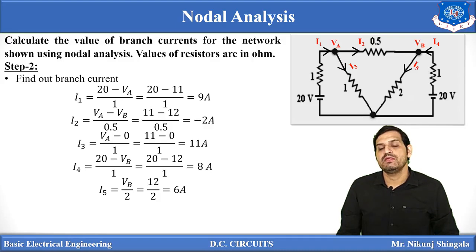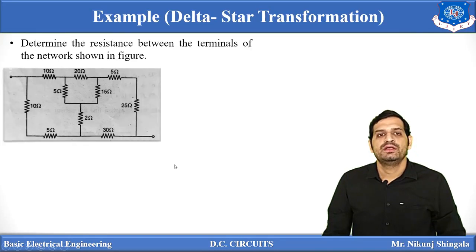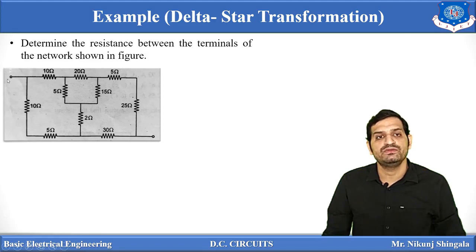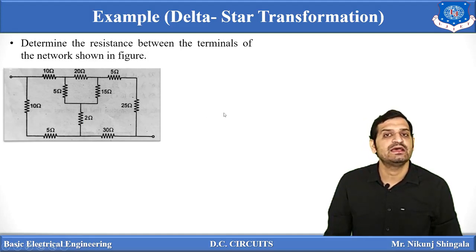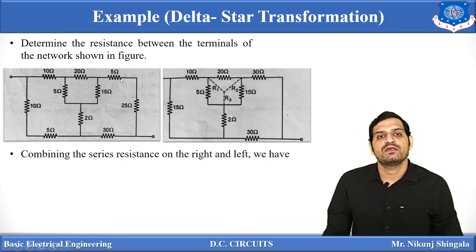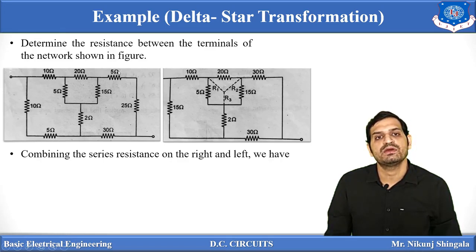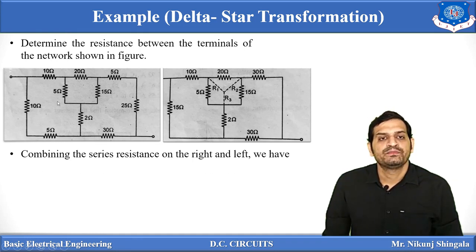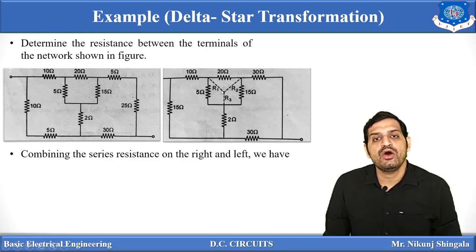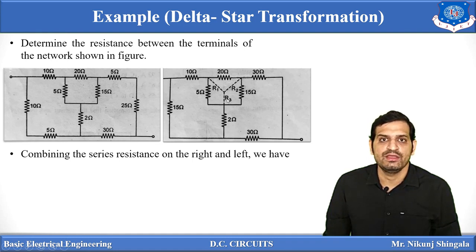Now moving to the example based on delta-star transformation. A network is given and we need to determine the equivalent resistance between two terminals. It consists of multiple loops and looks complex, but it can be easily solved using delta-star transformation. First, combine series resistances on the right and left sides: 10 + 5 = 15 ohm, and 5 + 25 = 30 ohm.